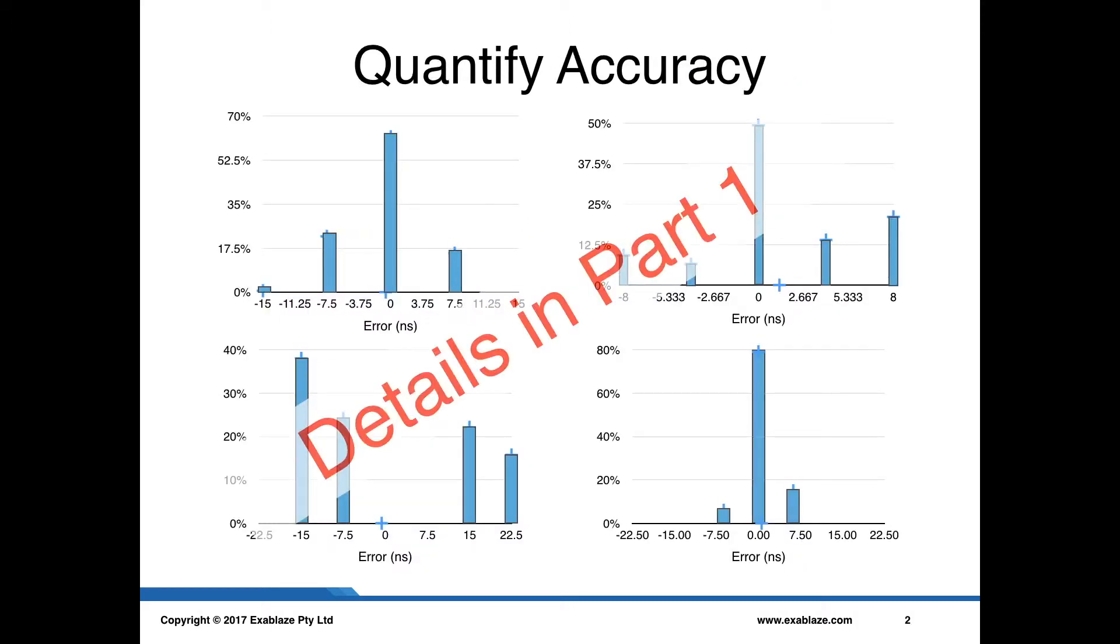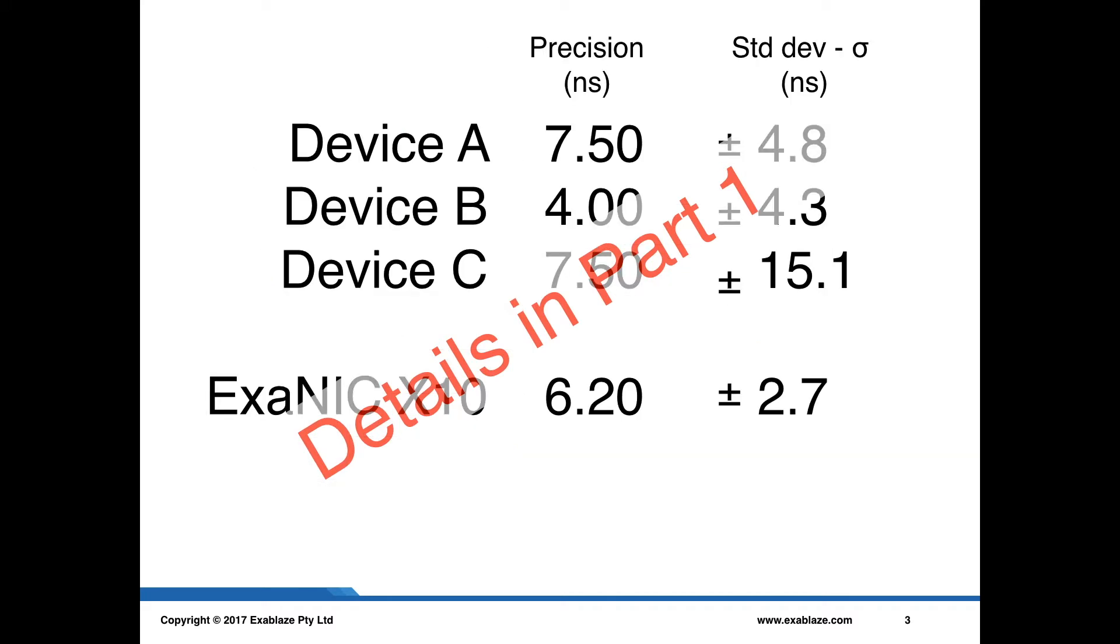In the previous part, we looked at quantifying the accuracy of network measurement devices. We settled on using the standard deviation as a way to summarize this accuracy, and we still use the quoted precision from manufacturers for the resolution.